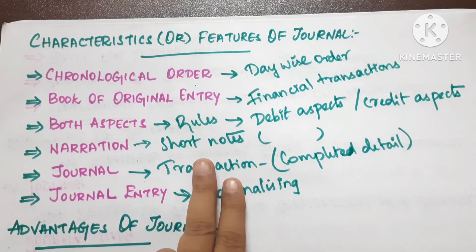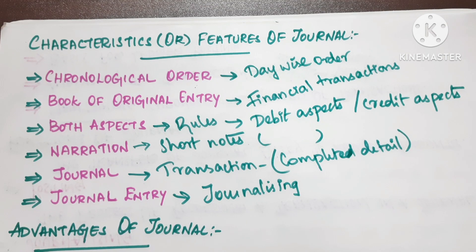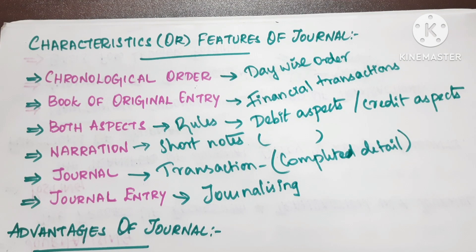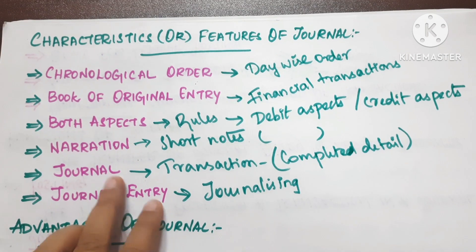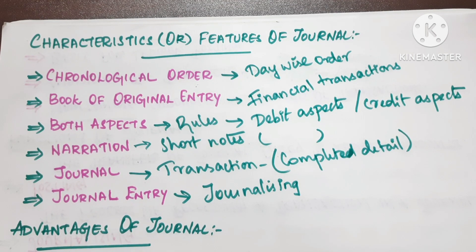Narration is a short note written after a journal entry. For example, if you make a payment, you write who was paid, the amount, any discount, the time, and the date — according to our understanding. The journal gives detailed information of the transaction through this narration.